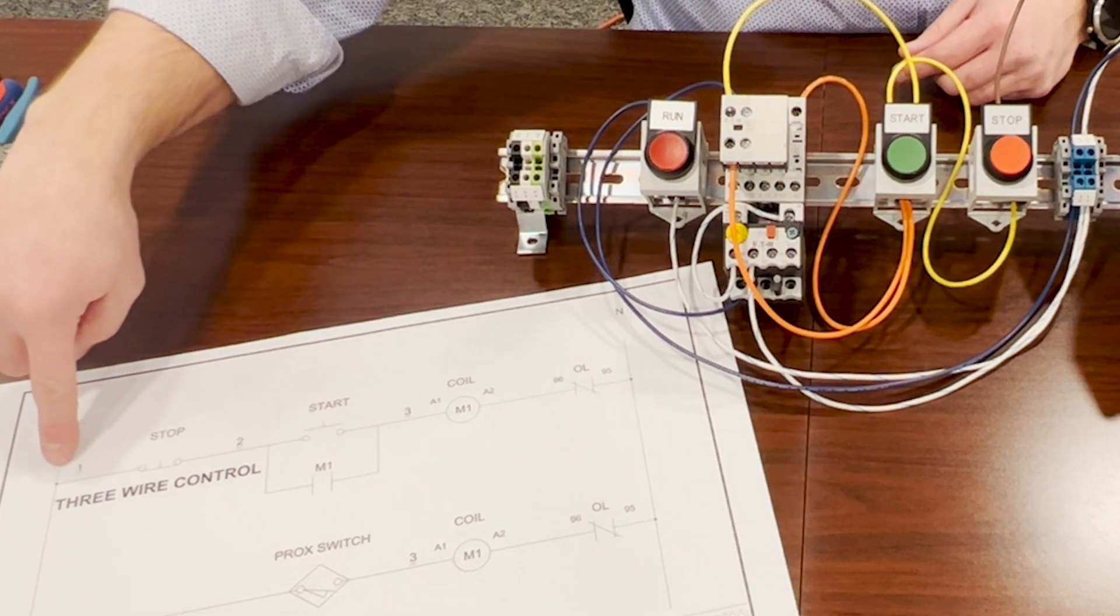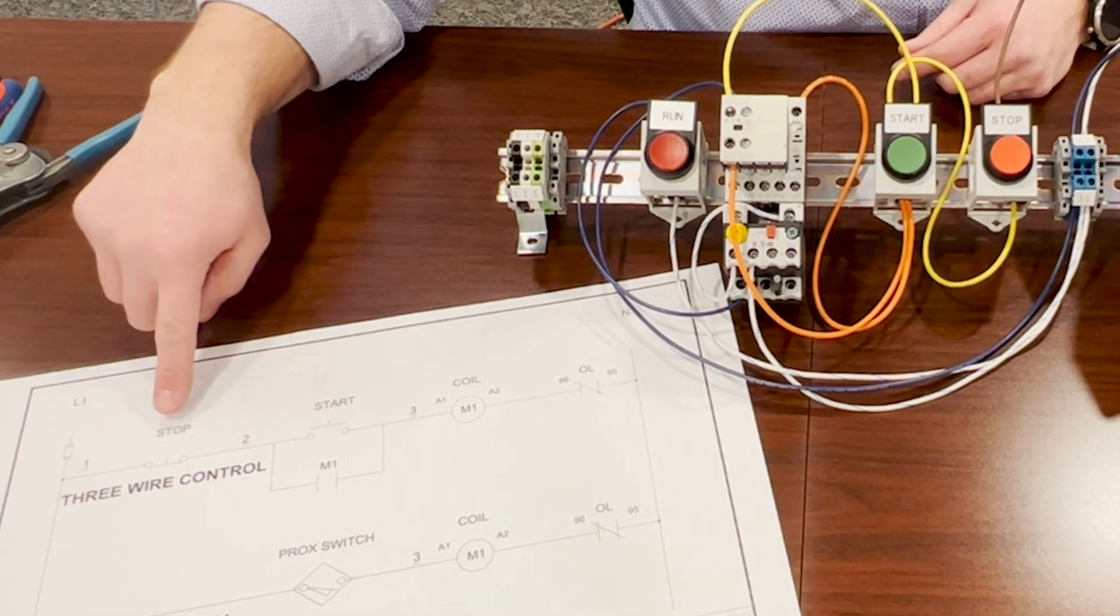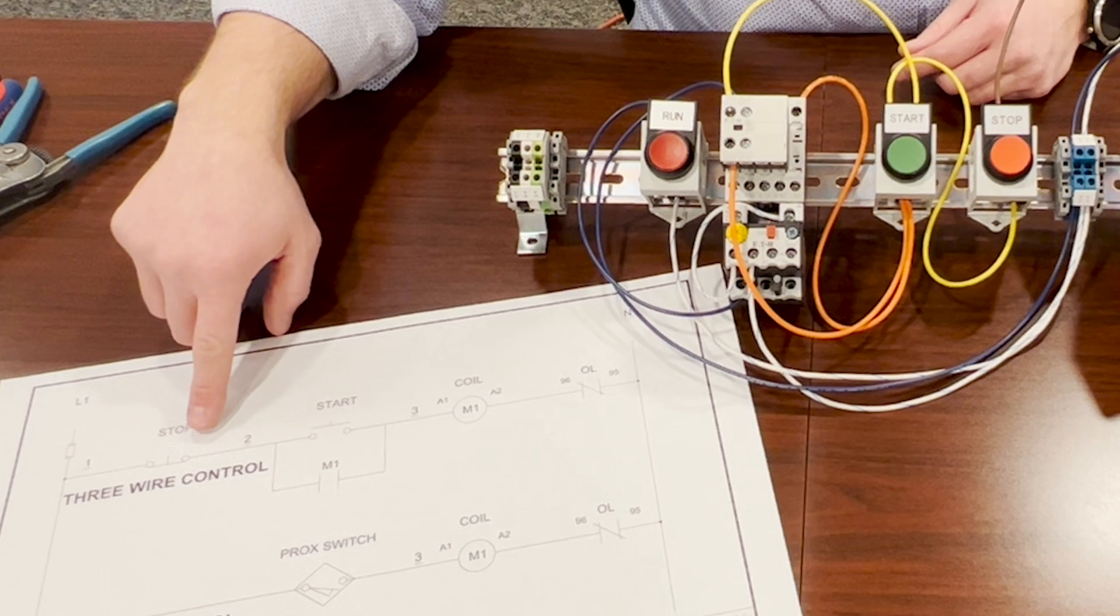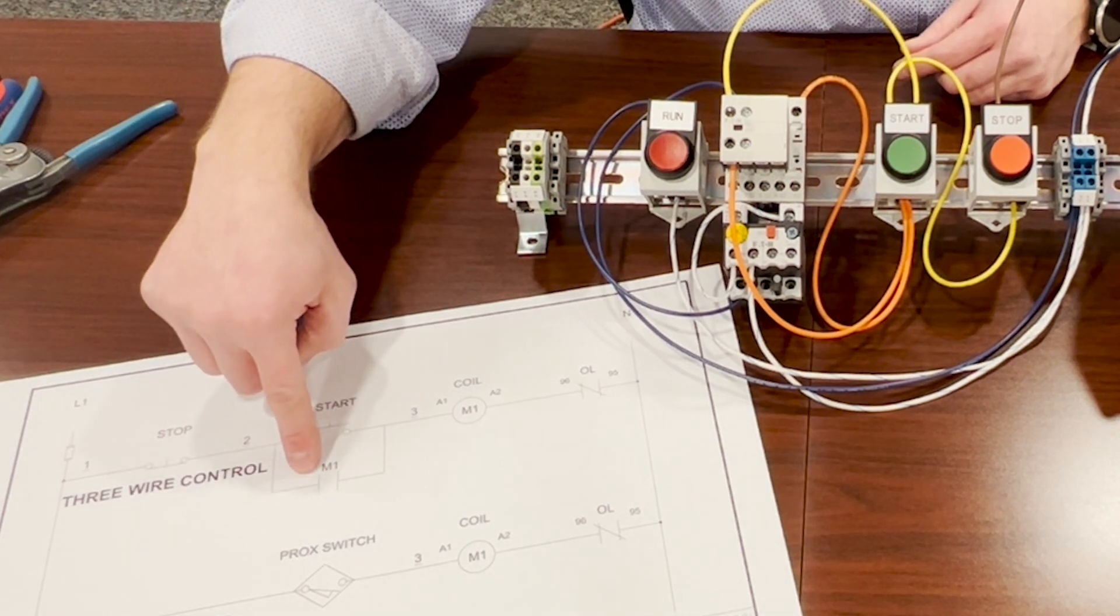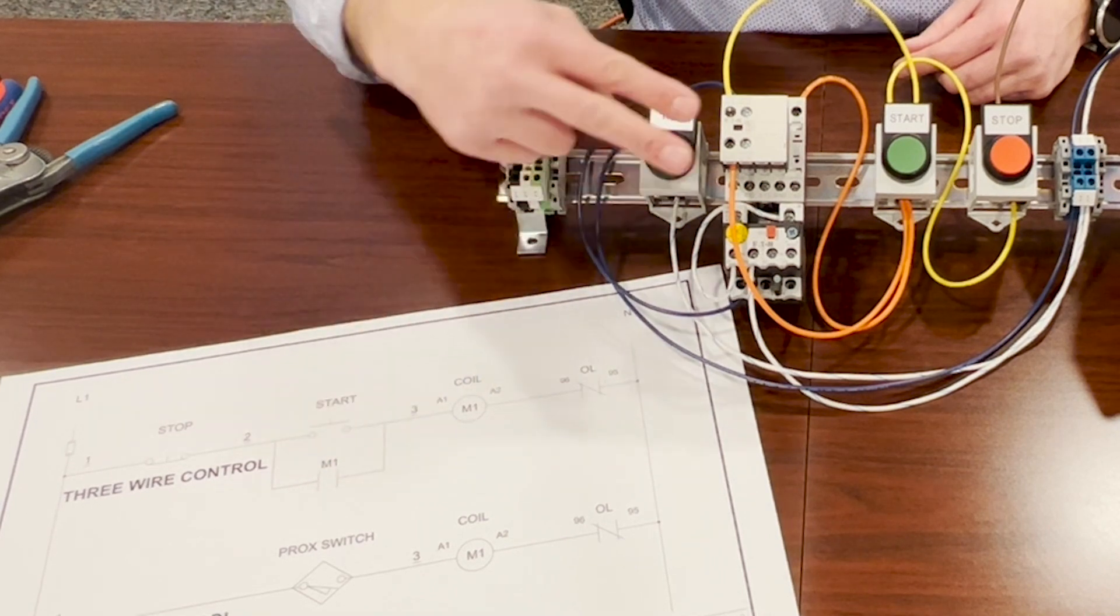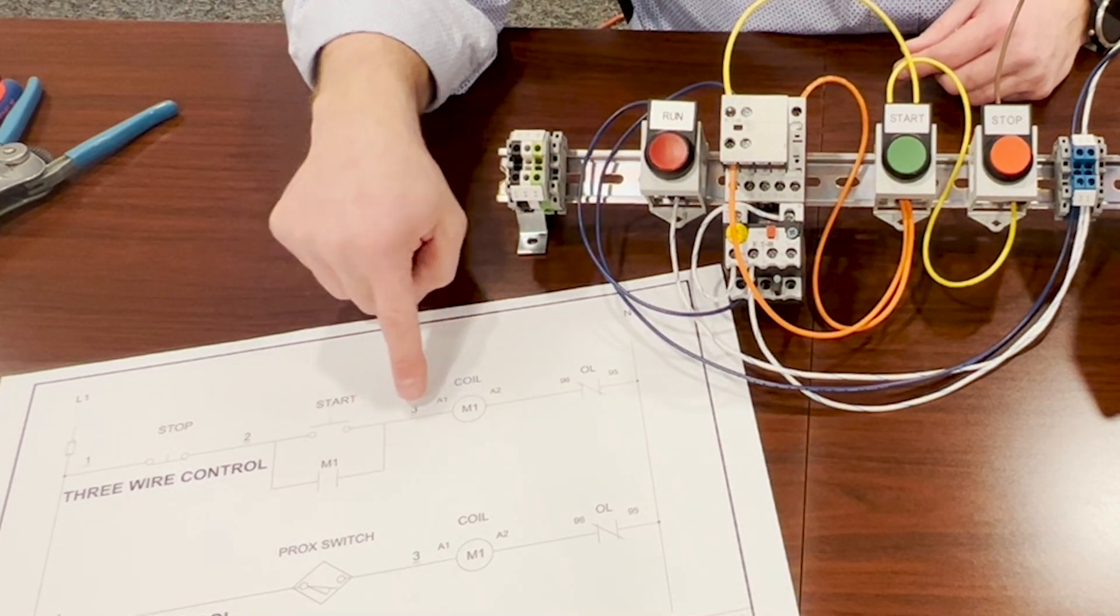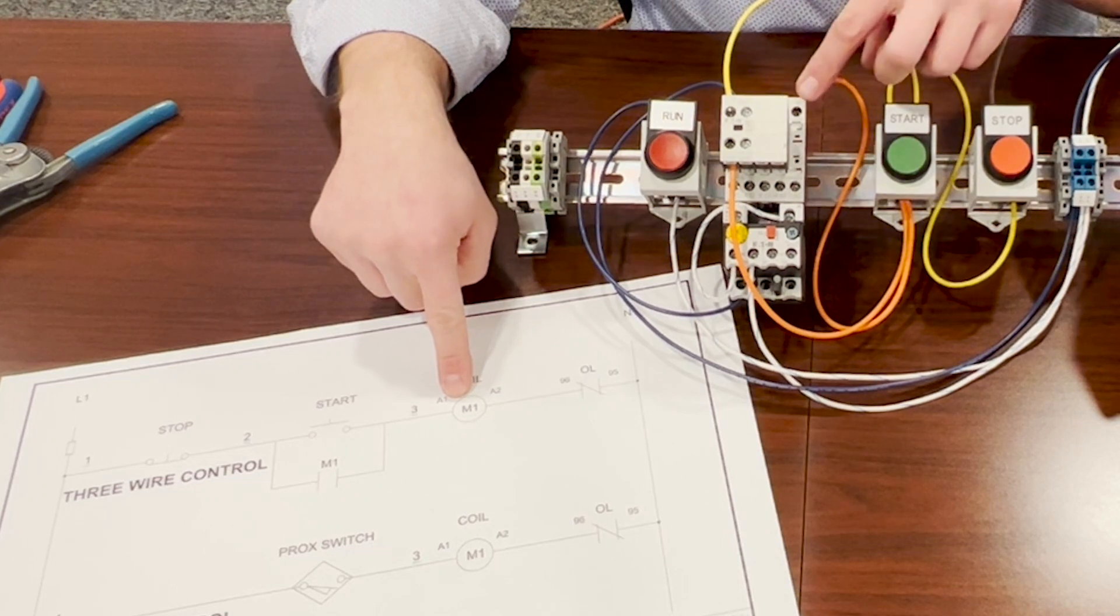So 24 volts to the normally closed on the stop button. From the stop button to the start, but also to the auxiliary contact on the motor starter, which is what we're showing here. And then from there, it's going to go to the coil on the starter here.